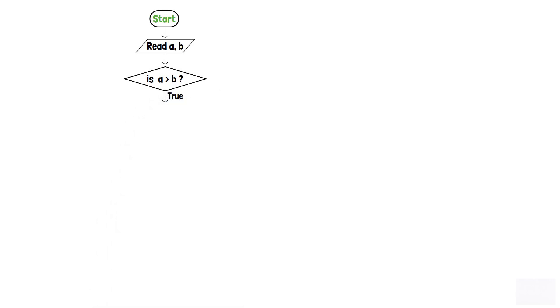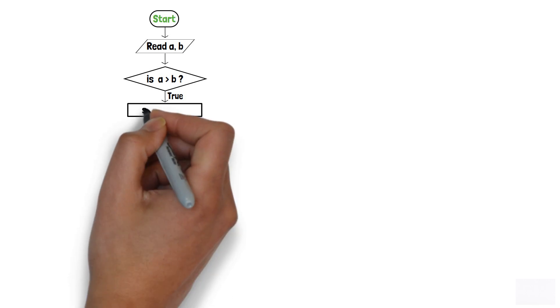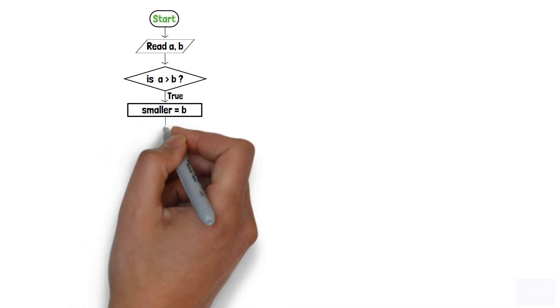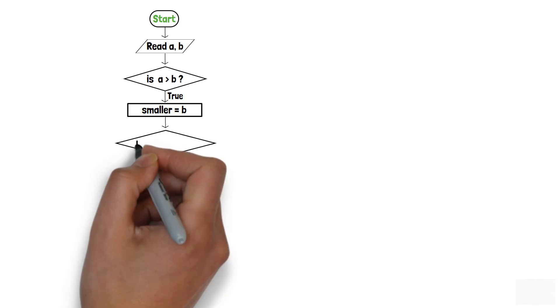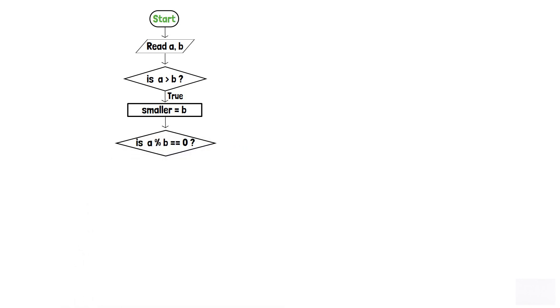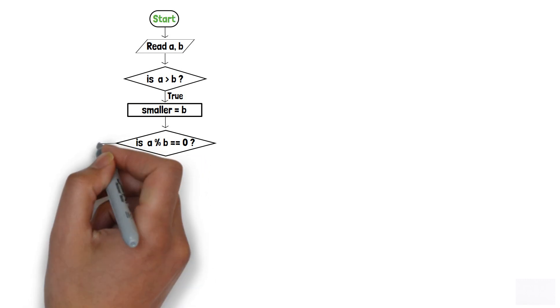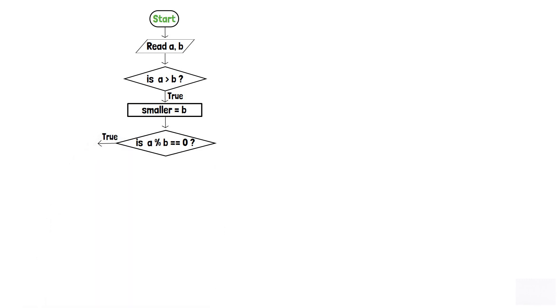If the condition is true — that is, if a is greater than b — then we create a new variable and copy variable b into it using a process box: smaller = b. After that, we add another decision box to check whether a modulo b equals 0 or not. If a modulo b equals 0, that means b is the GCD, so we print b with an output component and terminate the program.